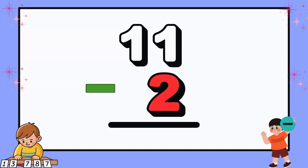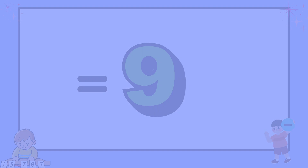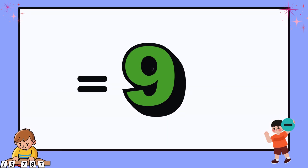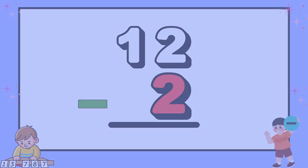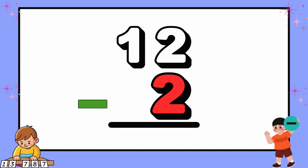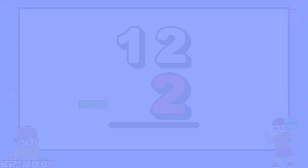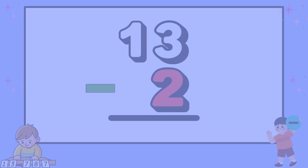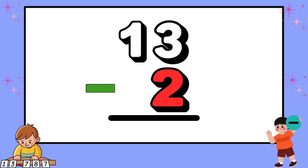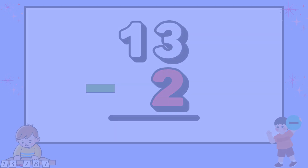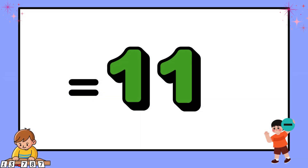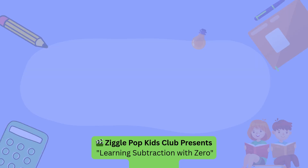Also, 11 minus 2 equals 9. Then, we have 12 minus 2 equals 10. Finally, 13 minus 2 equals 11.